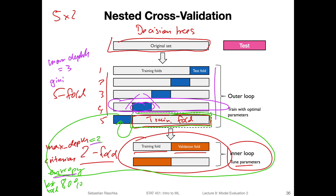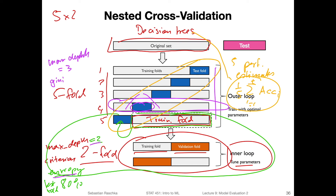After the five iterations, we get five performance estimates and average them. For example, the decision tree gets an averaged accuracy of perhaps 83% on that dataset. We have now evaluated the decision tree algorithm on that dataset. We can then do the same for different algorithms — k-NN, gradient boosting, random forests — and repeat the procedure. For each, we get an accuracy, telling us roughly what performance to expect if we tune that algorithm to a given dataset.